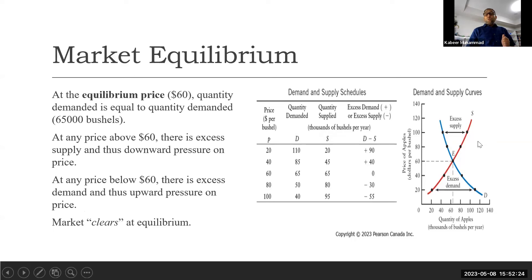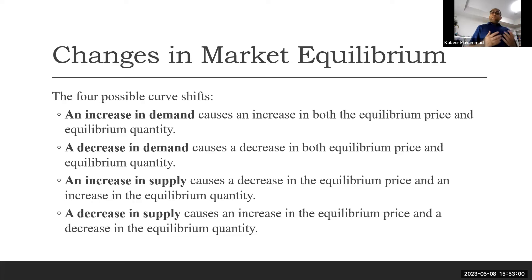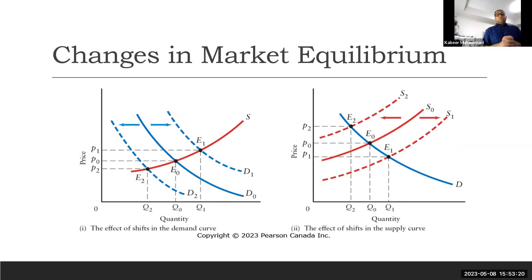When we combine the two curves — the demand and supply schedules discussed separately — we get a market clearing or equilibrium point. The market is not always at equilibrium because of changes in many other factors. A cost change can cause a shift of the demand curve or the supply curve. We see one by one that if there is an increase in demand, the demand curve shifts to the right; if there is a decrease, it shifts to the left.